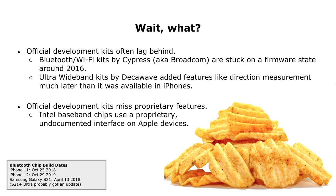You might wonder why I'm not just buying development kits. The weird thing is that a lot of development kits lag behind. Features are typically implemented for the big customers like Apple and Samsung in the mobile phone market, and the chips they get are typically not available as development kits for everyone. The iPhone usually has a slightly newer chip, and it roughly takes one year from building the firmware to shipping the devices. Other chip dates might vary.